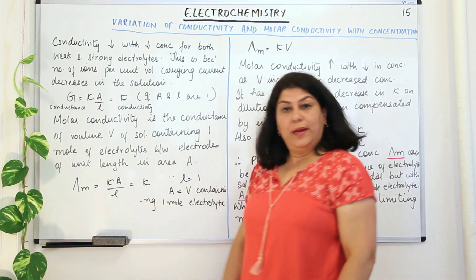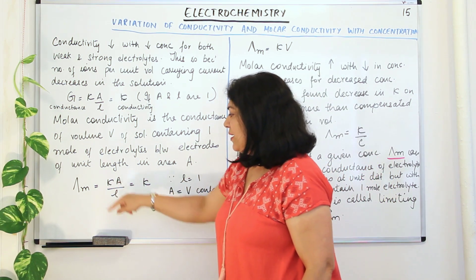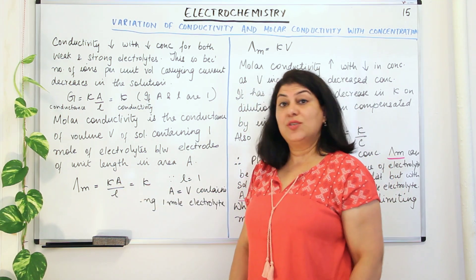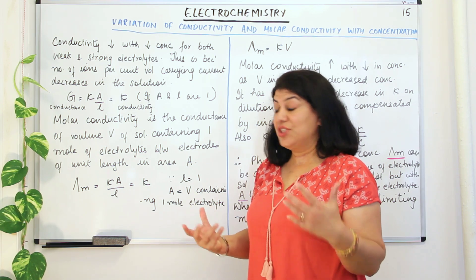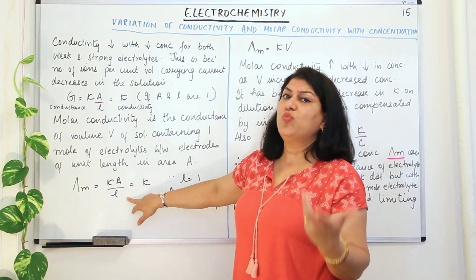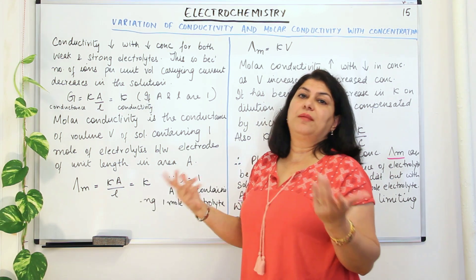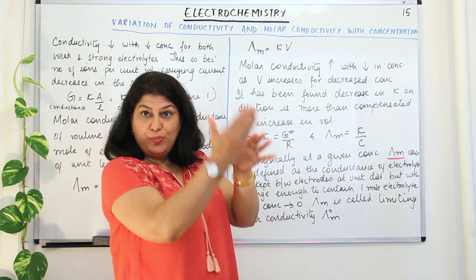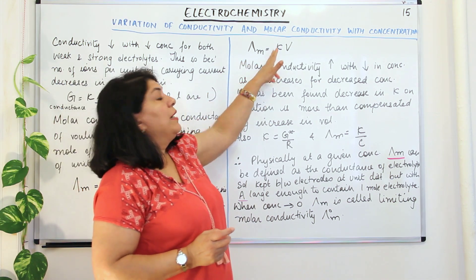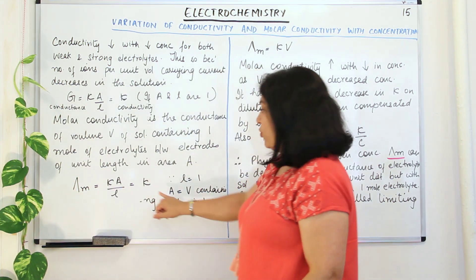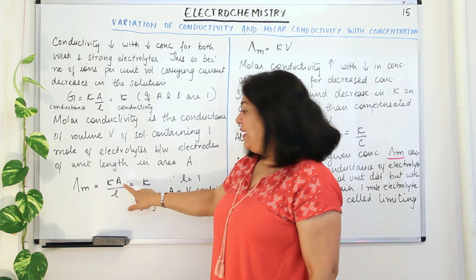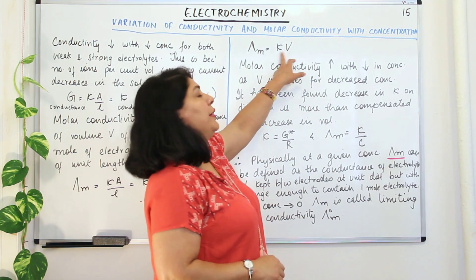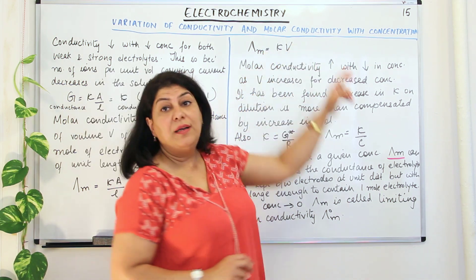Since length is one, if we multiply by length over length, area times length equals volume, and length times length equals one squared, which is just one. Therefore we can write that lambda m becomes equal to kappa times volume. It can be written as κV, where area into length is volume and length into length, which is one, is ignored.